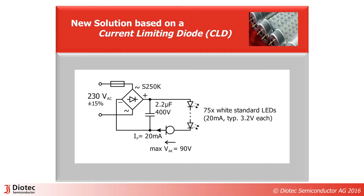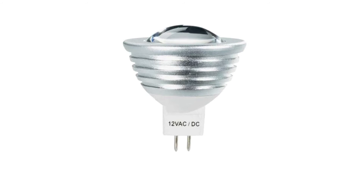Current limiting diodes, or CLDs for short, offer a solution which drastically reduces device count. You just need a bridge rectifier, a small film capacitor, and the CLD CL20M45. There is no flicker on the emitted light, even if the mains fluctuate, since the CLD keeps the driving current absolutely constant.